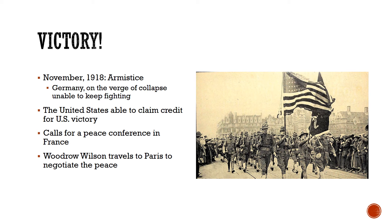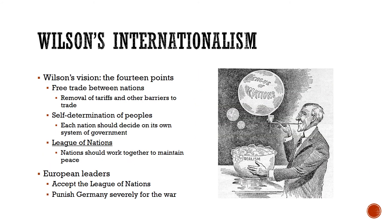A peace conference is set up in France to decide what's going to happen as a result of the war. All the leaders of the world, including Woodrow Wilson, travel to Paris to negotiate this peace. Woodrow Wilson has a vision — he is a highly educated man with a historical view of what the future should look like — and he sums up his ideas for the future in what he calls the 14 Points. We're going to look at three of the most important of the 14 Points.